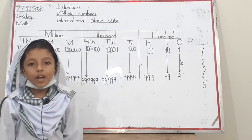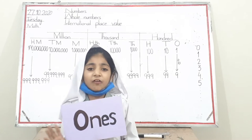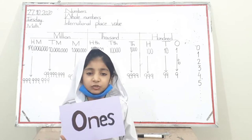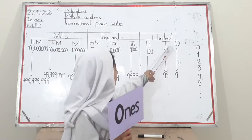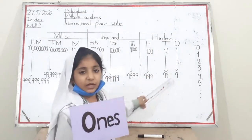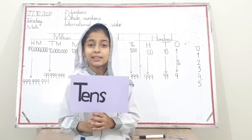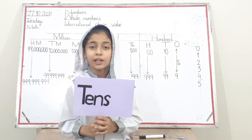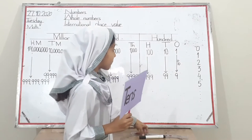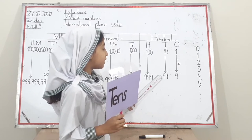Now the hundred family comes to introduce itself. Hello friends, I am ones, a member of the hundred family. I show one digit, for example one to nine. One is my smallest number and nine is my biggest number. Hi friends, I am tens, a member of the hundred family. I show two digits, for example ten to ninety-nine. Ten is my smallest number and ninety-nine is my biggest number.